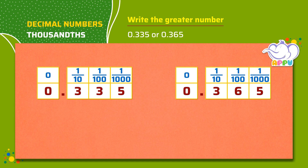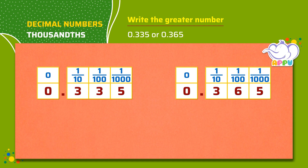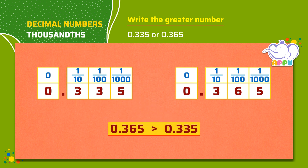We compare the ones place — both numbers are zero. Then we compare the tenths place — both numbers are three. Next we compare the hundredths place. Here, six is greater than three. So 0.365 is greater than 0.335.